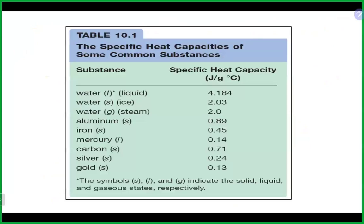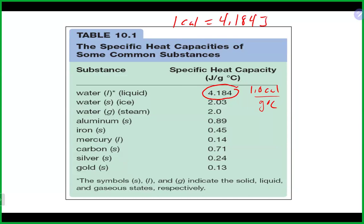Here's a table from your book of specific heat capacities. They expect you to know definitely the one for water, and you should probably know it in calories per gram per degree Celsius too. That number for the specific heat of water is also the conversion factor to go between calories and joules — it is the exact same number.